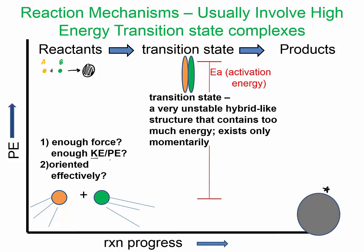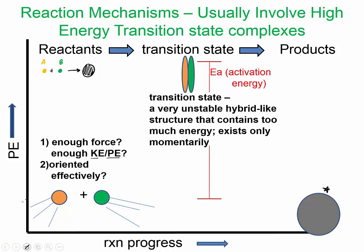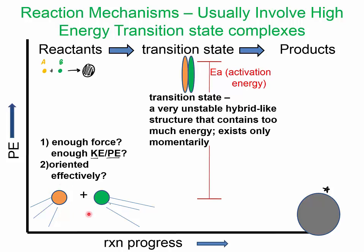The two reacting molecules need to have enough kinetic energy and potential energy in order to create this transition state. It's a high-energy, weird-looking species that we have a very difficult time understanding, because it's really hard to freeze and get a good look at what the molecules are doing in this transition state.